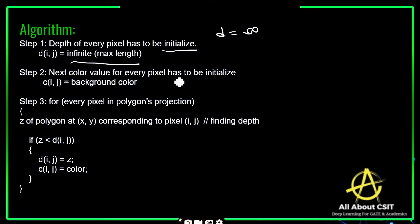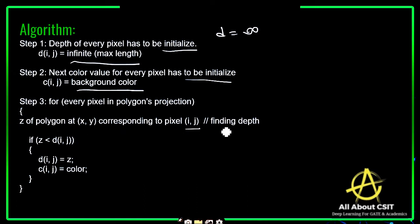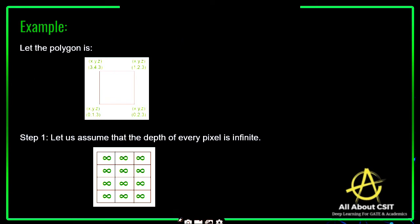Next, the color value for every pixel has to be initialized. Assign the color value C to the background color. If every pixel is a polygon projection, find the depth Z of the polygon at position (x, y) corresponding to pixel (i, j). If Z is less than the depth at (i, j), assign that Z value to the depth and update the color to C.